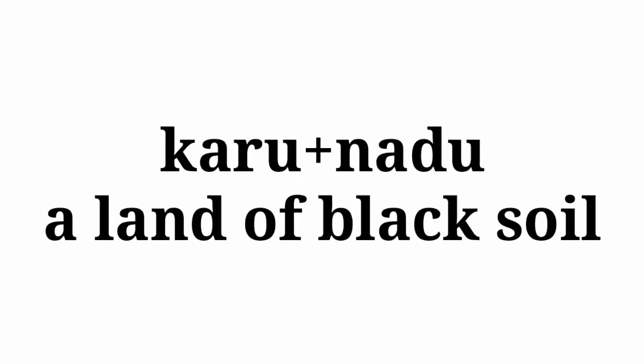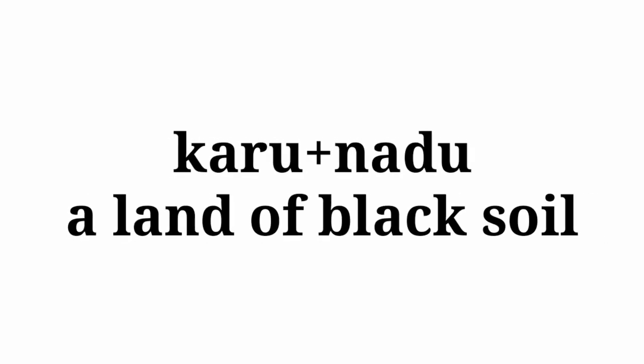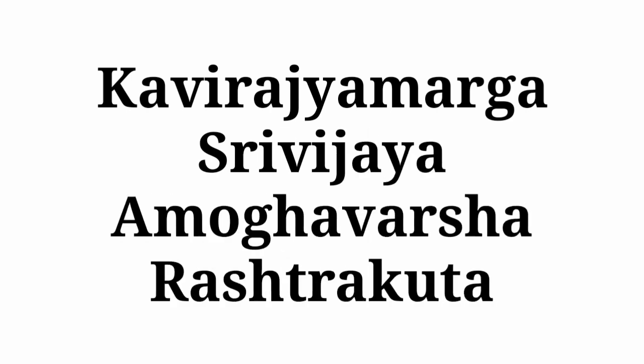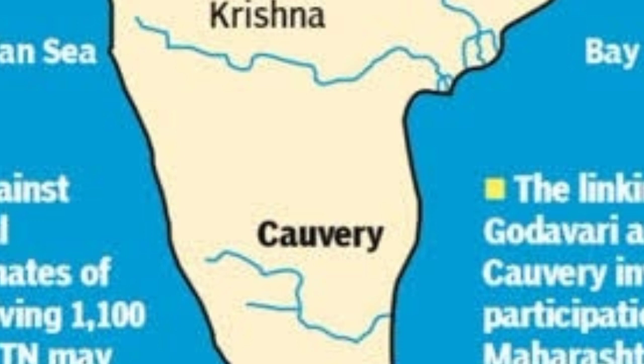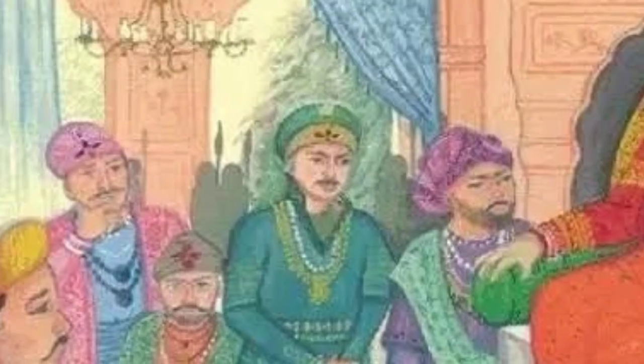Now let us see the historical background of Karnataka's integration movement. The name Karnataka has been used from ancient times. This land used to be called 'Karunadu' — 'karu' plus 'nadu' — meaning 'land of black soil.' A book called Kaviraja Marga, written by Sri Vijaya in the court of Amogavarsha — a king of the Rashtrakuta dynasty — mentions that the Kannada land stretched from the Kaveri to the Godavari river.